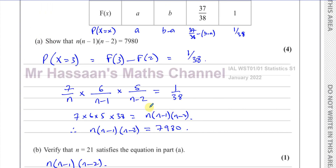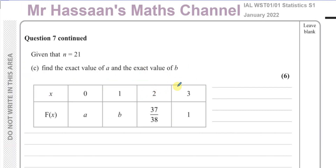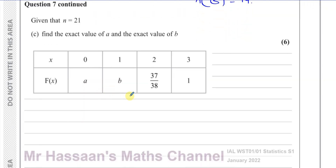Now we go on to part c. Given that n = 21, find the exact value of a and the exact value of b. The number of green marbles is 7, so the number of non-green marbles is 21 − 7 = 14.